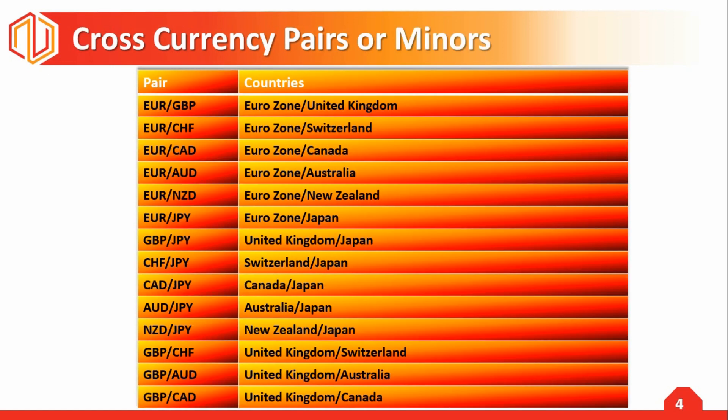Cross currency pairs are pairs that do not contain the US dollar on either side. In the trader's language, they are called crosses. Historically, to convert a currency you would first have to convert it into US dollars and then into the desired currency. With the introduction of crosses, we no longer have to do this, as all brokers now offer direct exchange rates. The most active crosses are derived from the three major non-US dollar currencies: the euro, the pound, and the yen. These currency pairs are also known as minors.